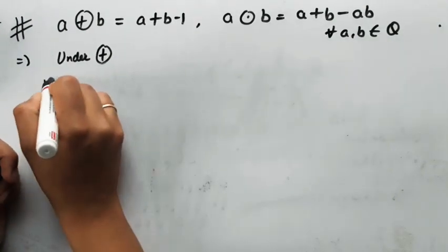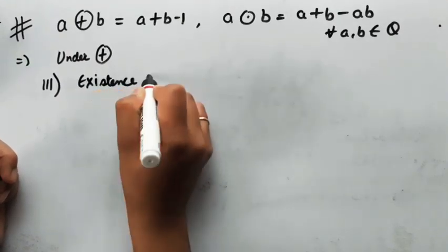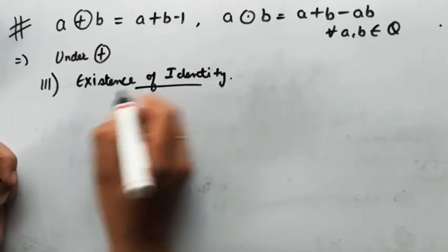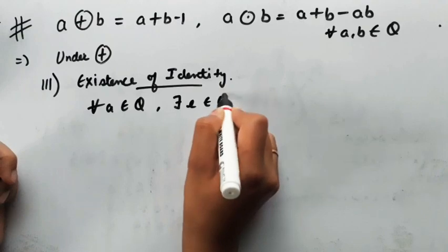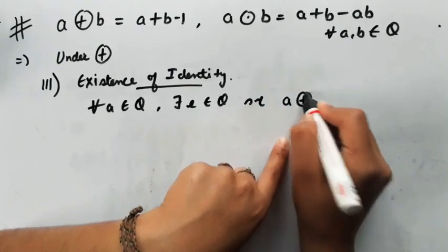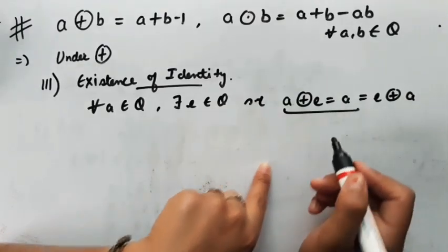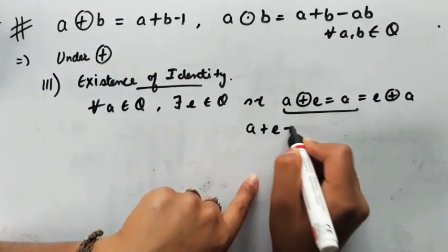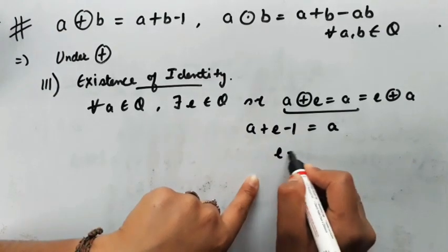Next is the third property: existence of identity. We need to find e in Q such that a⊕e = a = e⊕a for all a in Q. Applying the definition: a⊕e = a+e-1 = a, which gives e-1 = 0, so e = 1. Since 1 is a rational number, the identity element exists.